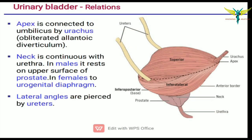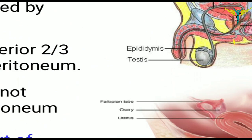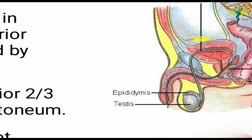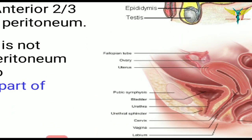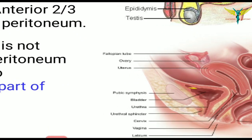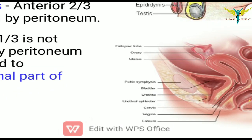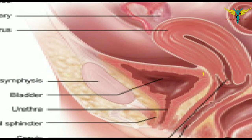The lateral angles are pierced by the ureters. The superior surface in males is entirely covered by the peritoneum. In females, only the anterior two-thirds is covered by the peritoneum, and the posterior one-third is not covered by peritoneum and is related to the supravaginal part of the cervix.